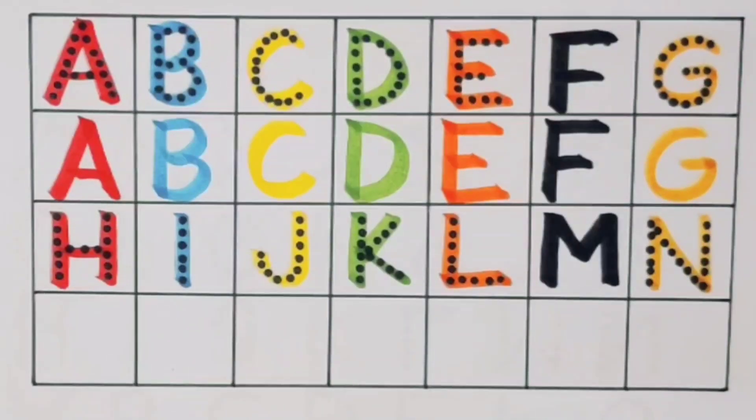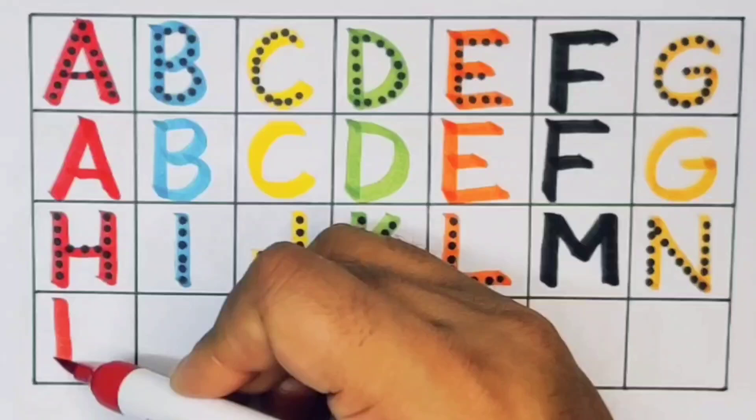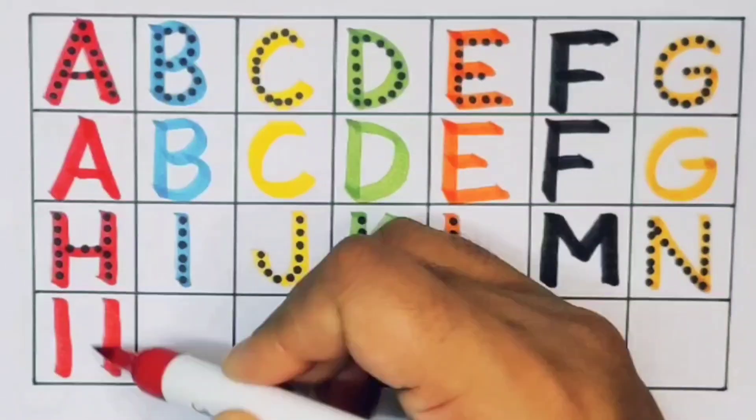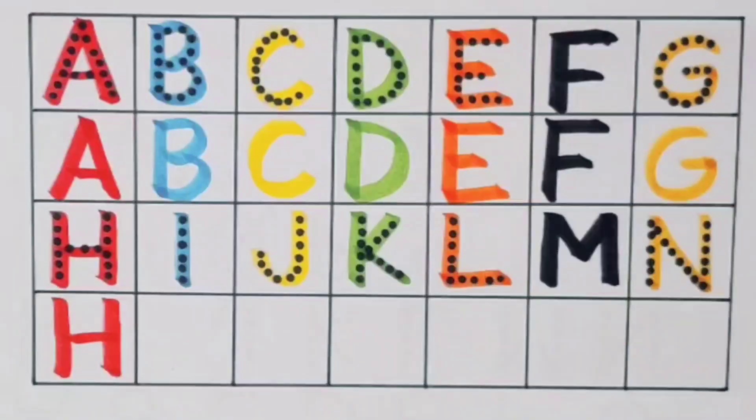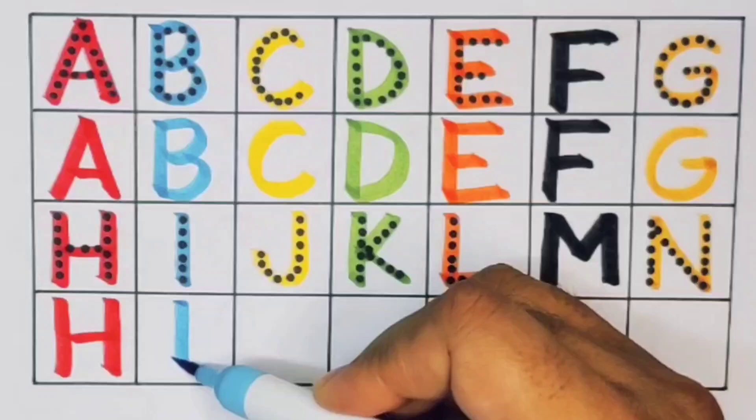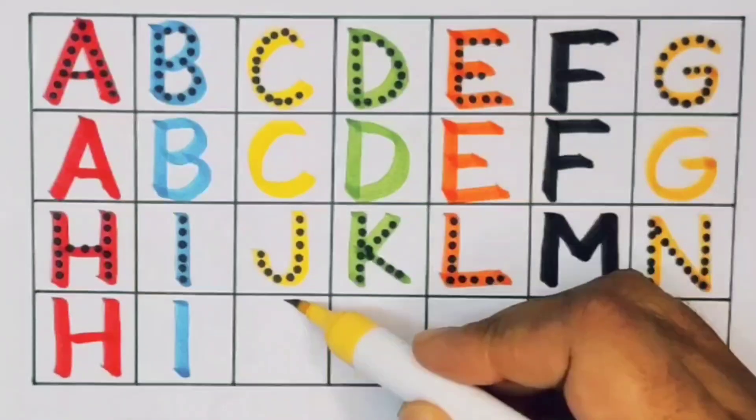Repeat again: H for helicopter, I for insect, J for jog.